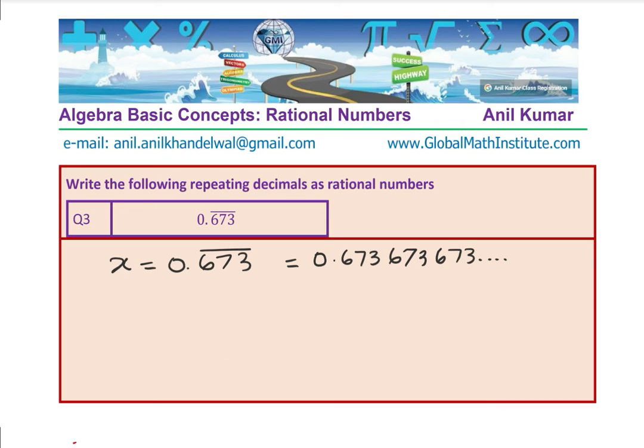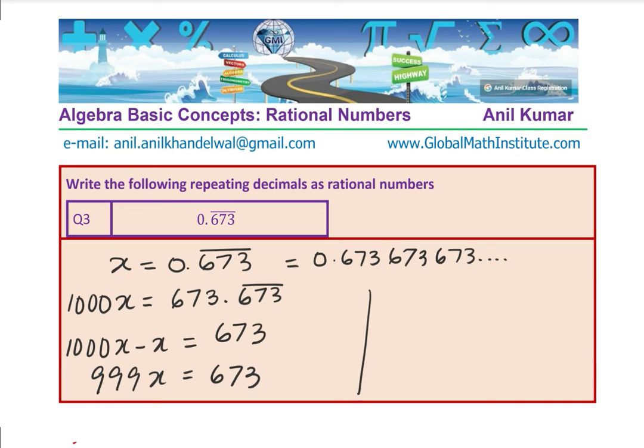Since there are 3 numbers repeating, I will multiply this by 1000. I should get 673.673 repeating. This time, if I subtract, I do 1000x minus x equals 673. That is 999x equals 673. So we get our solution: x equals 673 over 999.